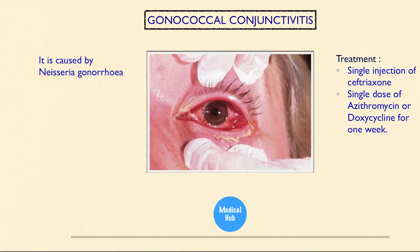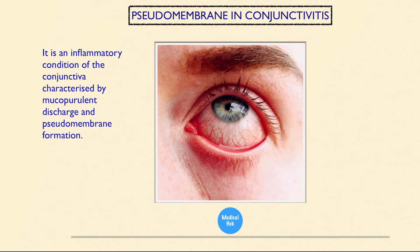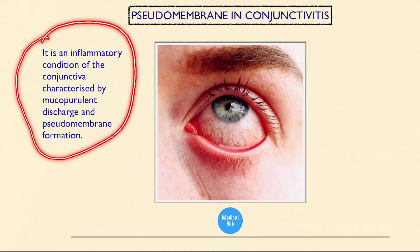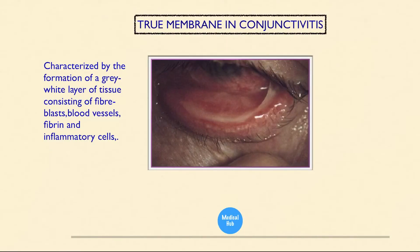Treatment for gonococcal conjunctivitis is a single injection of ceftriaxone, single dose of azithromycin, or doxycycline for one week. This is pseudomembrane conjunctivitis — it is an inflammatory condition of the conjunctiva characterized by mucopurulent discharge and pseudomembrane formation.